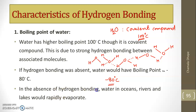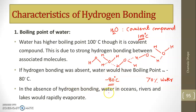In the absence of hydrogen bonding, water in the oceans, rivers, and lakes would rapidly evaporate. Our Earth's surface is covered by nearly 70 percent water, and if hydrogen bonding were absent, there would be continuous evaporation of water from the oceans, rivers, and lakes.